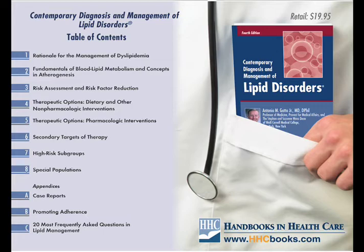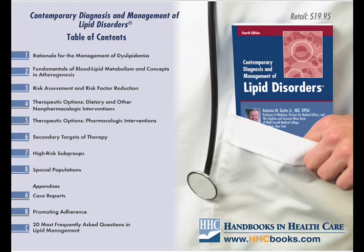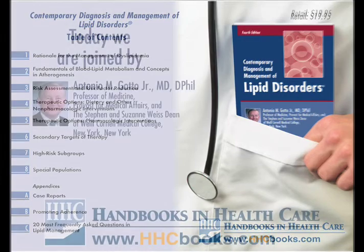The JUPITER trial, which will be reported at the American Heart Association, was stopped early. This was a trial with rosuvastatin in individuals who had too low a level of LDL to be eligible for drug therapy by current guidelines. The trial was stopped after only about three years. These individuals had relatively normal levels of cholesterol and LDL but were selected on the basis of a high level of high-sensitivity CRP. There was such a reduction in events that the primary endpoint was reached at least two years ahead of time.